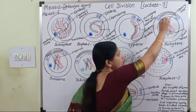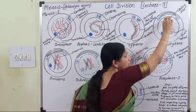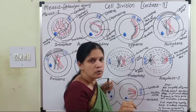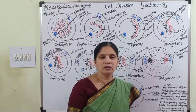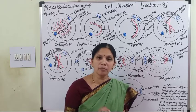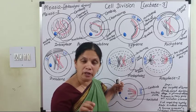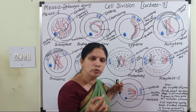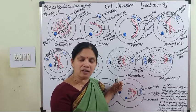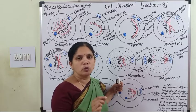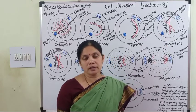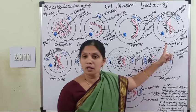During crossing over, the non-sister chromatids are nicked — that is, cut — and the endonuclease enzyme plays a very important role in cutting. Part of the paternal chromatid joins with the maternal chromosome, and for rejoining the ligase enzyme plays an important role. So endonuclease and ligase enzymes are critical for cutting and rejoining during crossing over in pachytene.